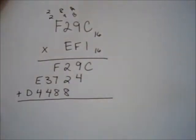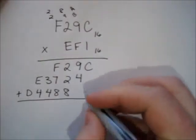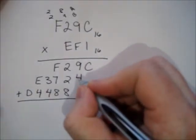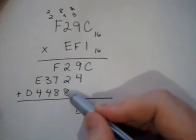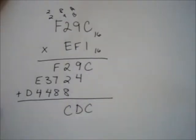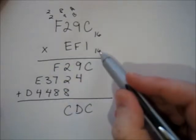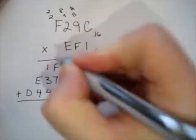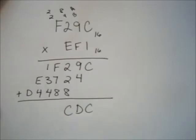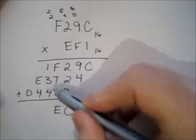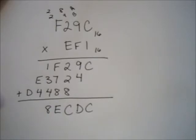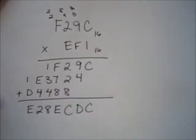Now add the three rows in base sixteen. C plus nothing is C. Nine plus four is 13 — represent that as D. Two plus two plus eight is twelve — that's the letter C. Fifteen plus fifteen is 30 — sixteen goes in once with 14 left over, that's E, carry the one. One plus three plus four is eight. Fourteen plus four is eighteen — one sixteen and two more. One plus thirteen is fourteen, that's E. The final answer is E-two-eight-E-C-D-C base sixteen.